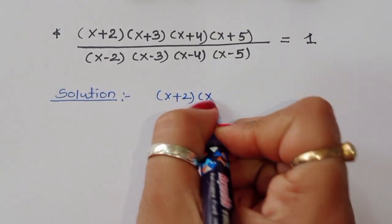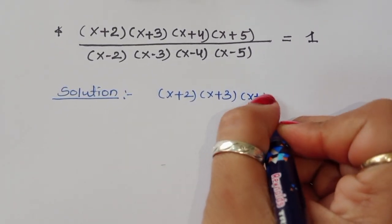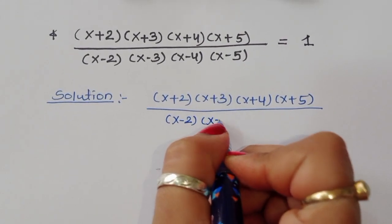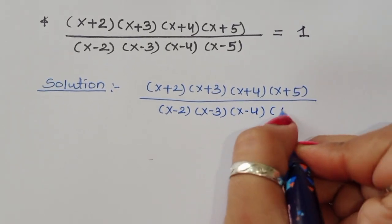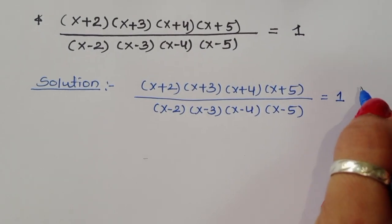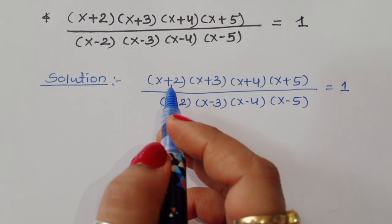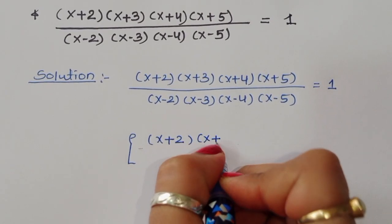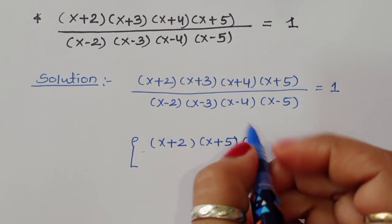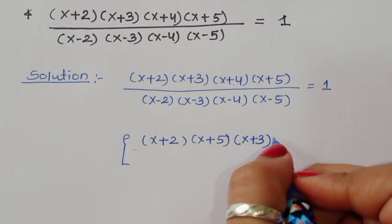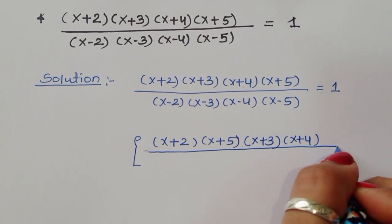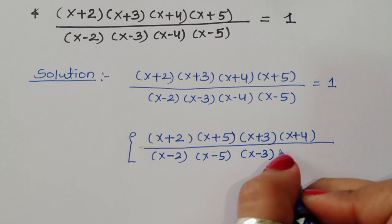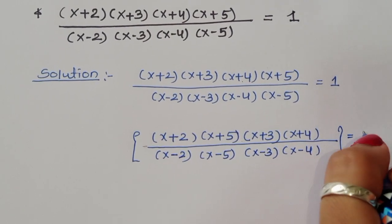We rewrite the given equation: (x+2)(x+3)(x+4)(x+5) divided by (x-2)(x-3)(x-4)(x-5) equals 1. We can do some rearrangement here — we regroup as (x+2)(x+5) times (x+3)(x+4) in the numerator, and (x-2)(x-5) times (x-3)(x-4) in the denominator, all equal to 1.